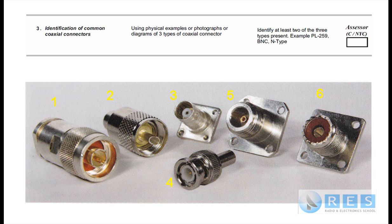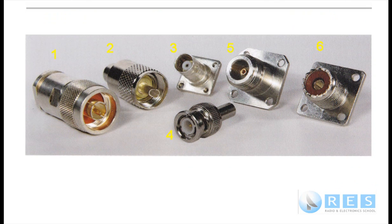Connector number one is the plug for connector number five. So one is an N-type plug, five is an N-type socket. Two is a UHF plug, six is a UHF socket. Four is a BNC plug, and three is a BNC socket. What I might do to help you is type that in.